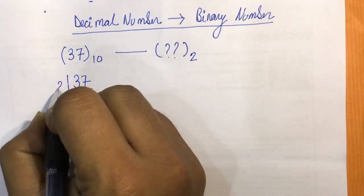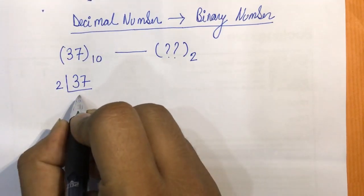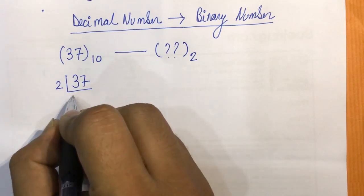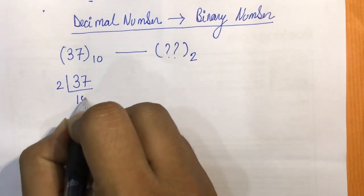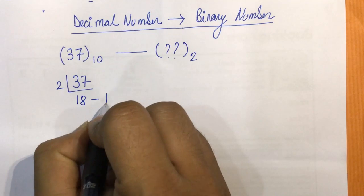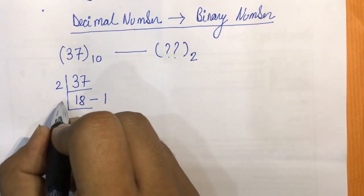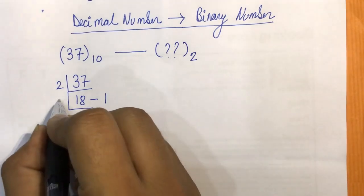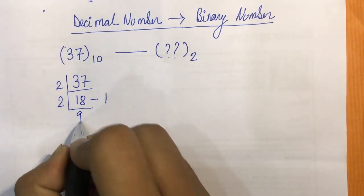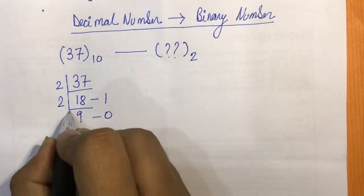Let's see how we need to convert it. 37 will divide it by 2. We need to write the quotient over here and remainder over here. So if we divide 37 by 2, we get a remainder as 1. Then again, if we keep on repeating this process till we get 1, if we divide 18 by 2, we'll get 9 with a remainder 0.